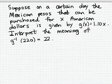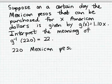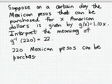So that gives us an easy way of interpreting this expression. This says that 220 Mexican pesos can be purchased for 22 American dollars on this day. So we can write down that interpretation: 220 Mexican pesos can be purchased for 22 American dollars.